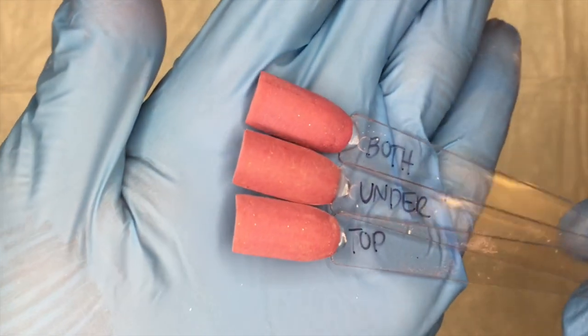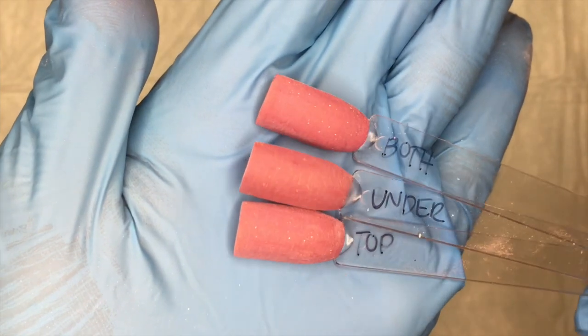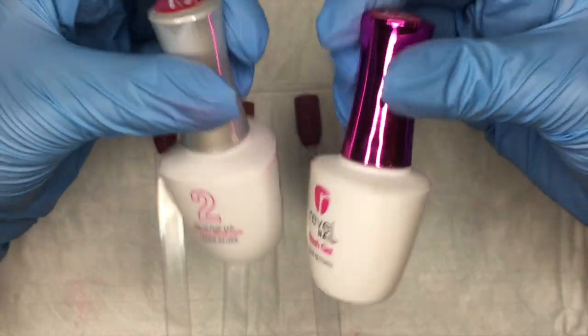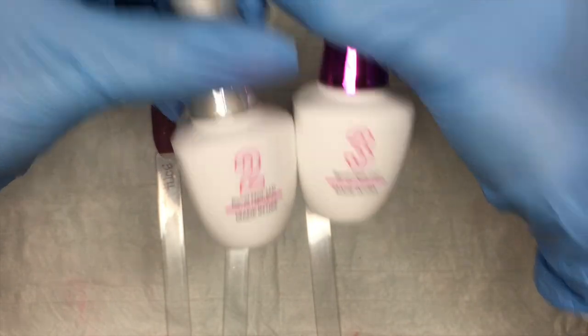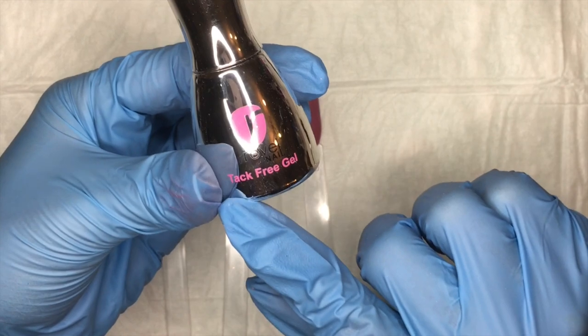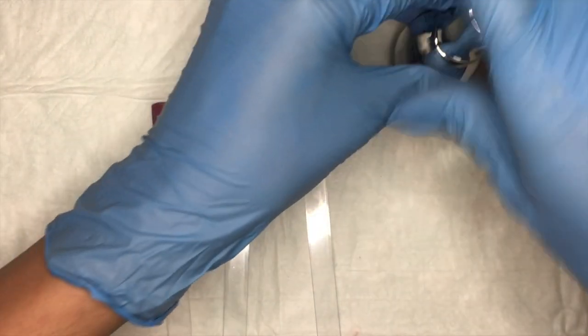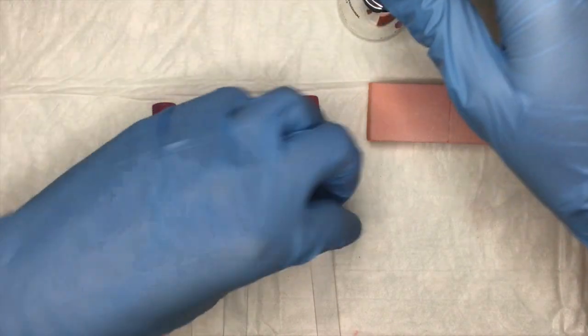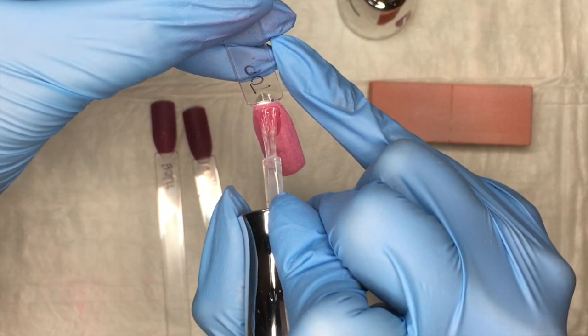And then this is what they're all looking like at this point. And you can go in with your step two and your step three, your activator and your finishing gel. But I personally like to use a gel top coat for my swatches. Like I said, once again, it's personal preference. So I'm just going to quickly apply a coat of this tap-free gel top coat on top and then cure it for 60 seconds.